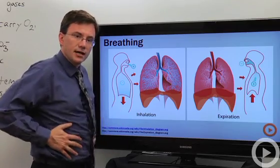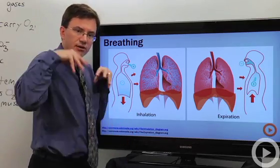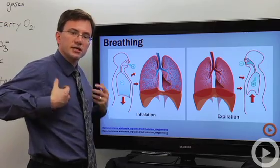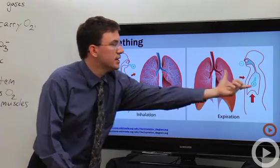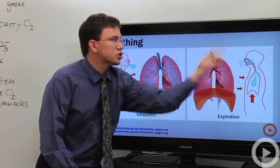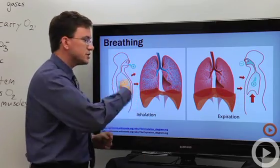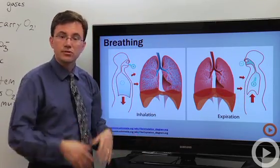You can help this along by tightening your abs to squish that diaphragm up even faster. You've also got muscles on the inside of your ribcage that can pull the ribcage down to help increase the pressure in your lungs, squirting the air out. So, you just cycle back and forth between these two and that's how we breathe.